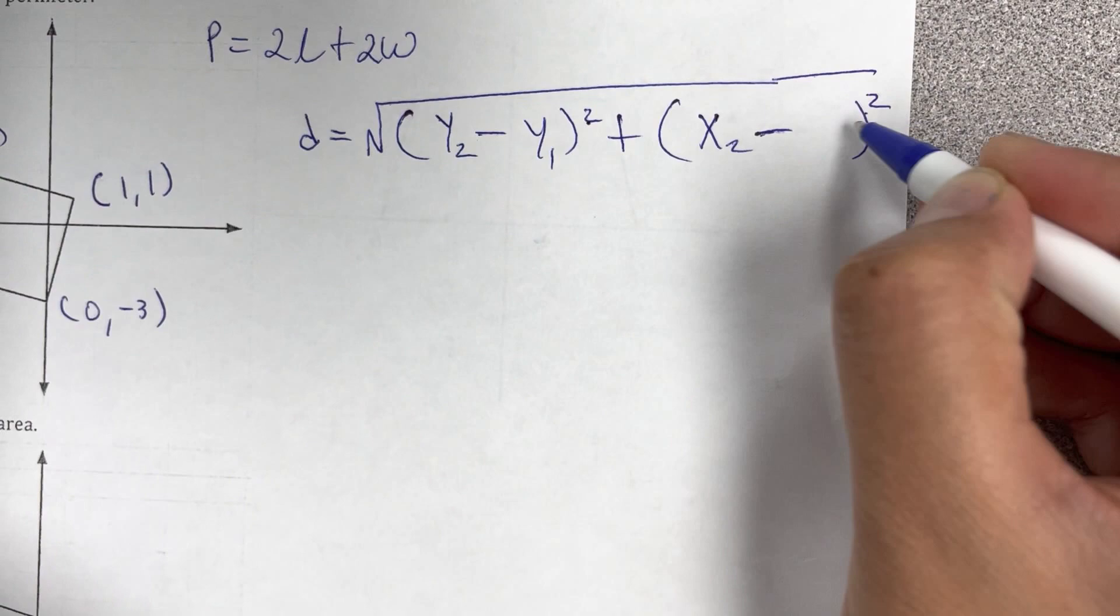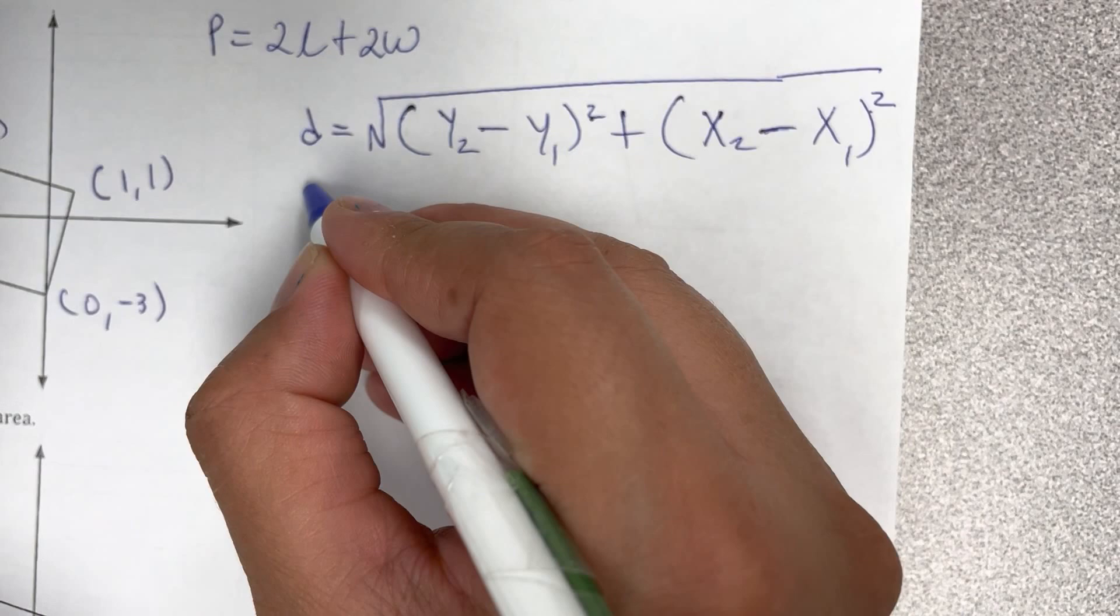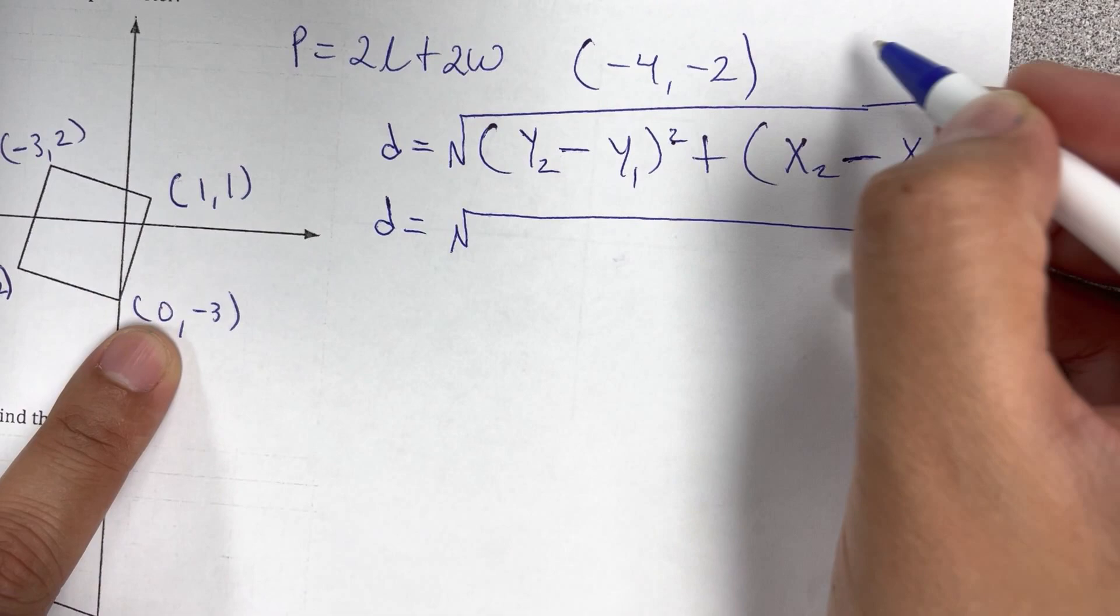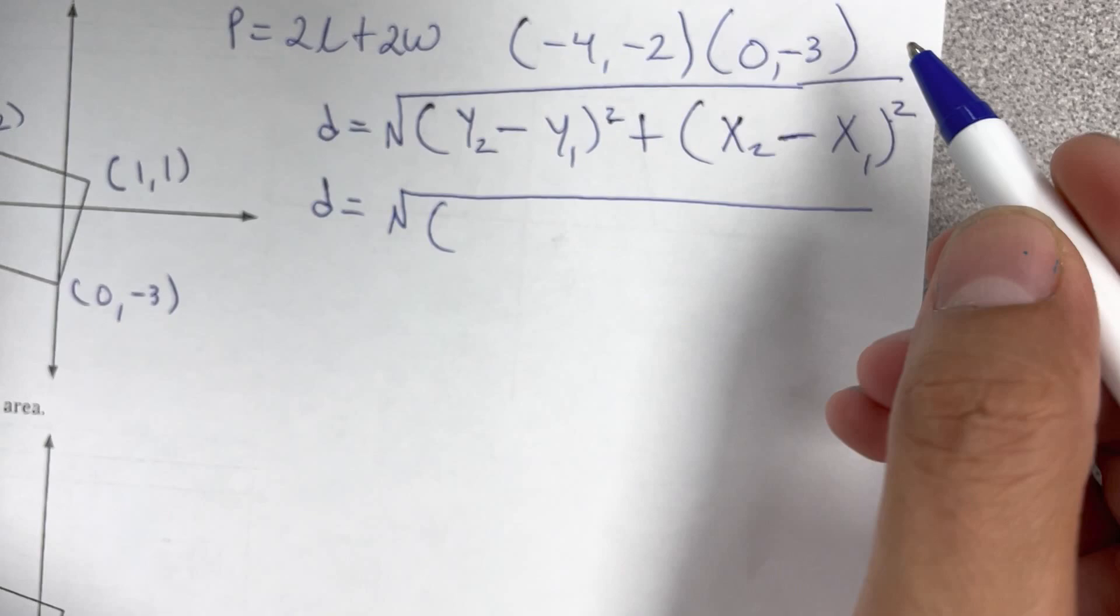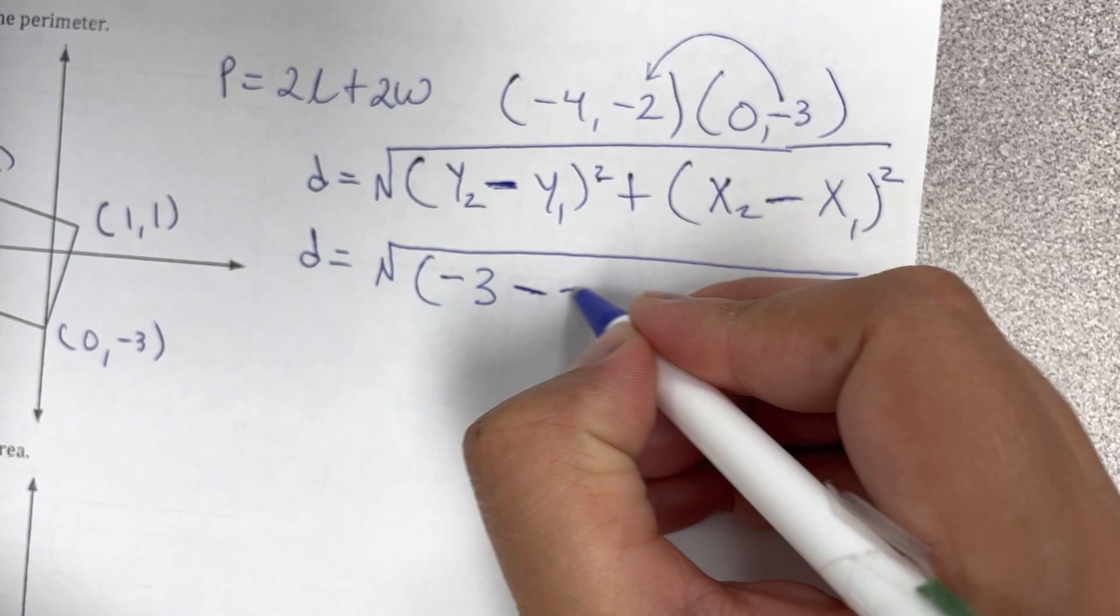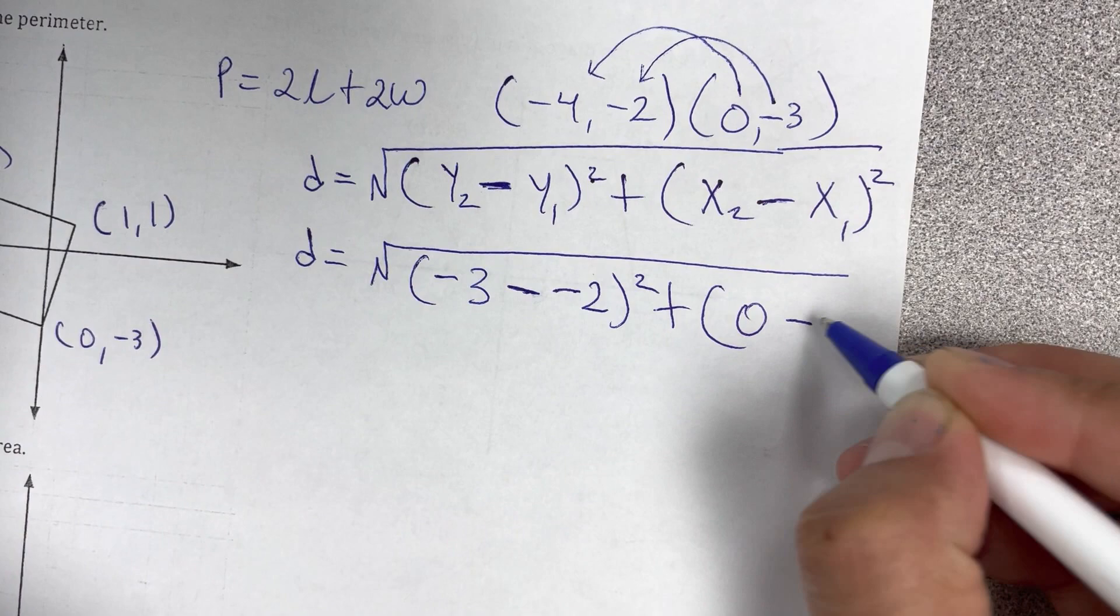So d is equals to, vamos a usar, but we're going to find this one first, so it's negative four, negative two, and the other point is zero, negative three, so negative three minus negative two, negative three minus from the formula, but then you have negative two for the number. Negativo de la formula, negativo del número. For x is zero minus negative four, zero minus negative four, square.